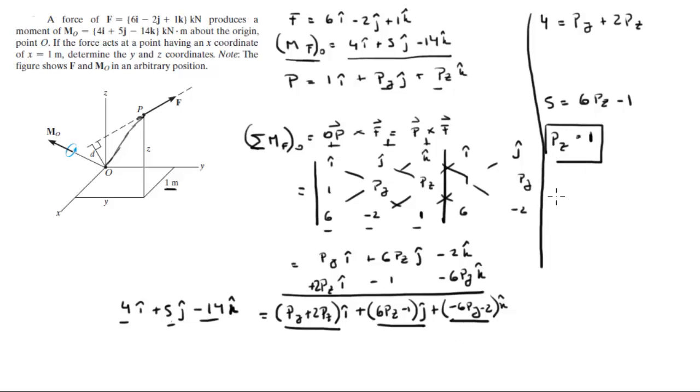And the last equation is negative 6Py minus 2 is equal to negative 14, which you can already solve for Py by adding 2 to this side. It's negative 12 divided by negative 6. You get that Py is equal to positive 2.